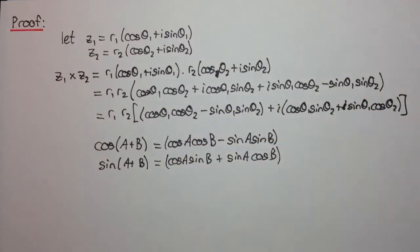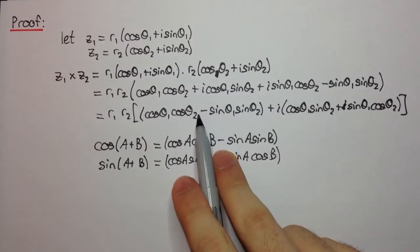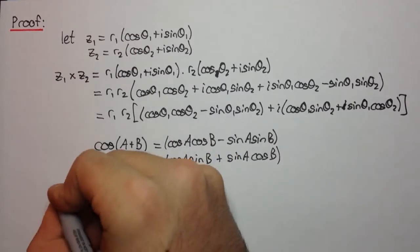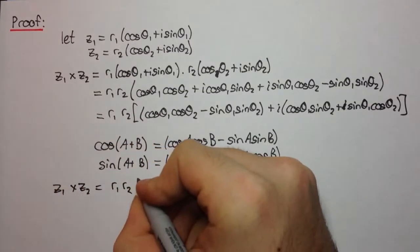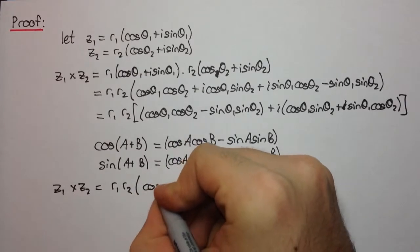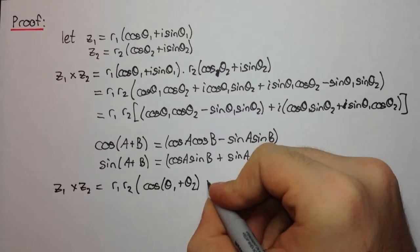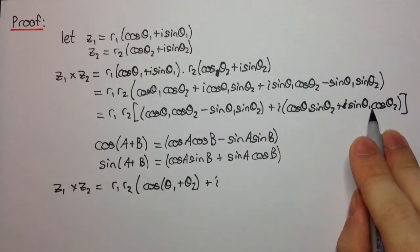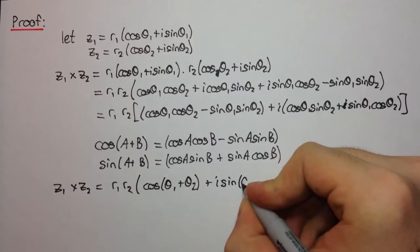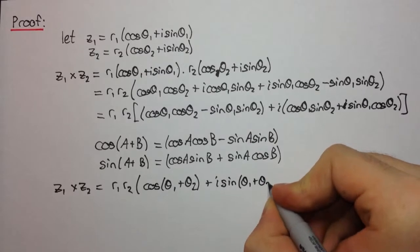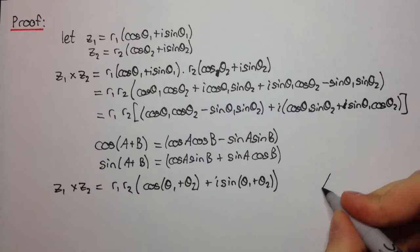Right? So these are the two values. Now we look up here and we recognize that this is the expansion of cos theta1 plus theta2. And so we have z1 times z2 equals r1 r2 times cos theta1 plus theta2 plus i times sin theta1 plus theta2. Right? And that's the end of the proof. That's the identity we wanted to show.